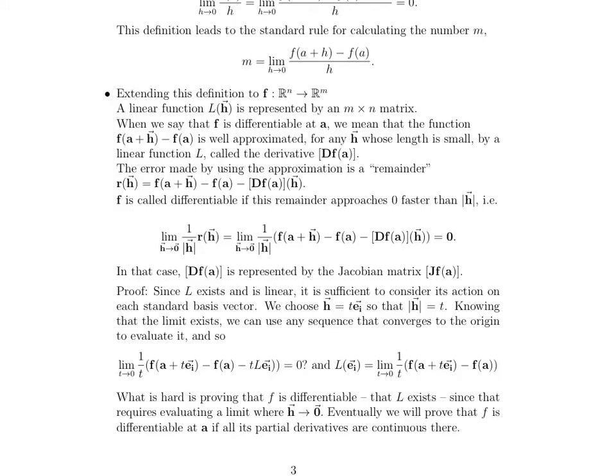Since we already know the limit exists, we can use any sequence that converges to the origin to evaluate it. So, we can just take T goes to 0, right? And by 0, we mean T is going towards the origin. As T goes to 0, we're going to be taking the limit of 1 over T. Why did we do that? Well, we knew that the length of h was equal to T, and so we're just rewriting this guy up here. So, we have 1 over T times F of a plus T times E sub i, since that's our h, minus F of a, minus, and so we know that this particular linear function is T times L times E sub i, because L of h, we knew that h was T times E sub i, so by linearity, this is T times L times E sub i. And no, there shouldn't be a question mark here. That's not a question.